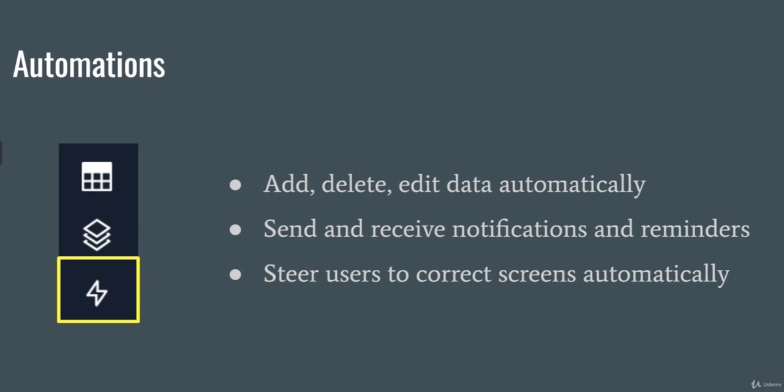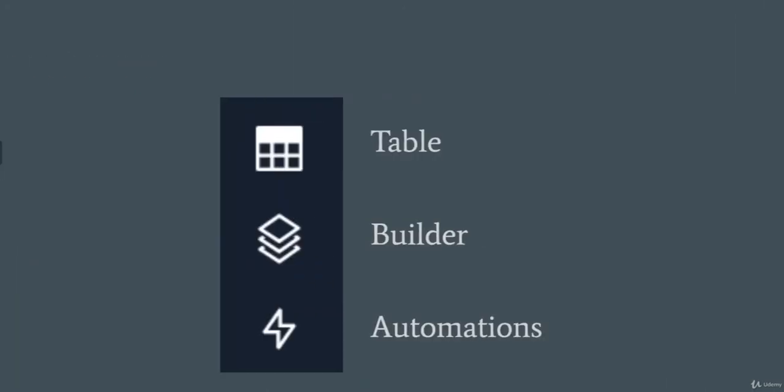So those are the three main components: tables, where all your data is being stored; builder, where you create and design your app; and automations, which allows things to happen automatically without you intervening. How do they work together? Tables allow the app to display information, so builder and tables are related. Whenever something is added to the table, you can send a custom notification — that's an automation. They're all intertwined and connected, and these are the main components of all Honeycode apps.